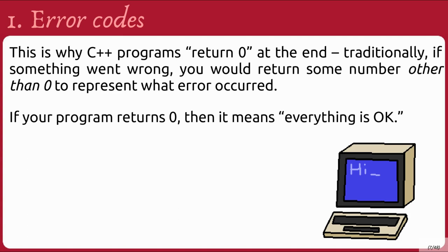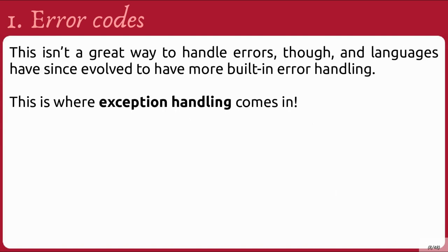Traditionally, if something went wrong, you would return some number other than zero to represent which error occurred. If your program returns zero, it means everything is okay. This isn't a great way to handle errors, though, and languages have since evolved to have more built-in error handling. So we have exception handling.